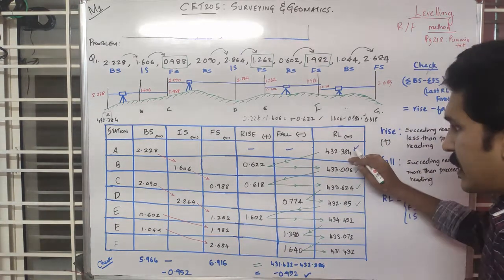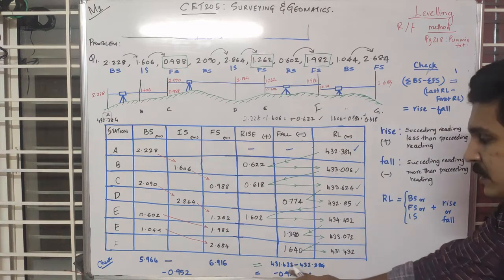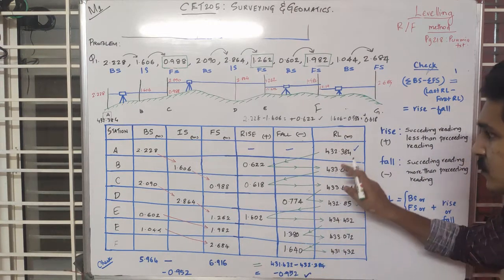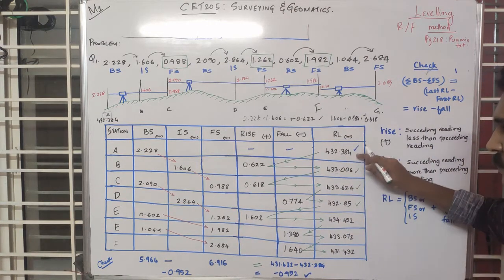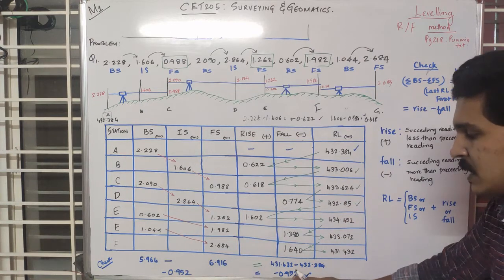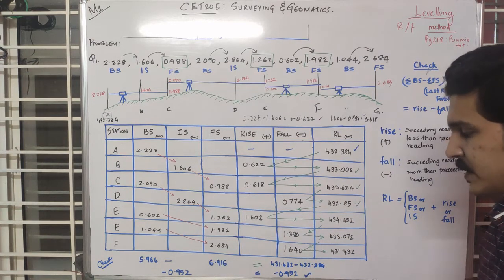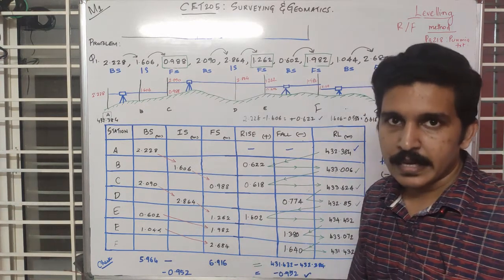The last reduced level value is 431.432. Plus the first value of 432.84 minus 2.952 equals 0.952. One value is added to verify the arithmetic check.